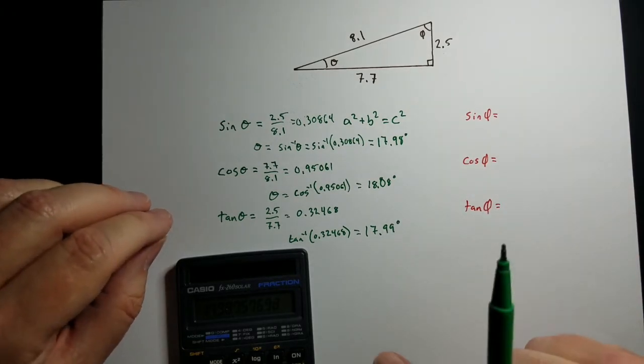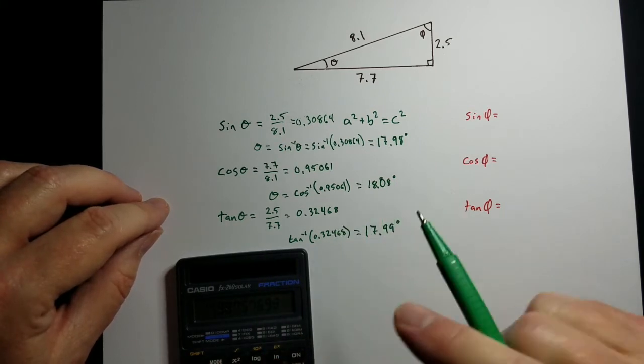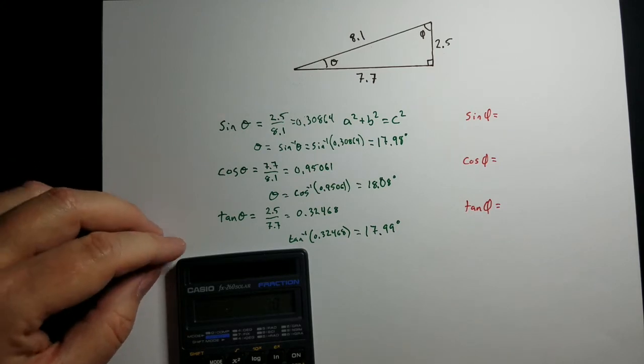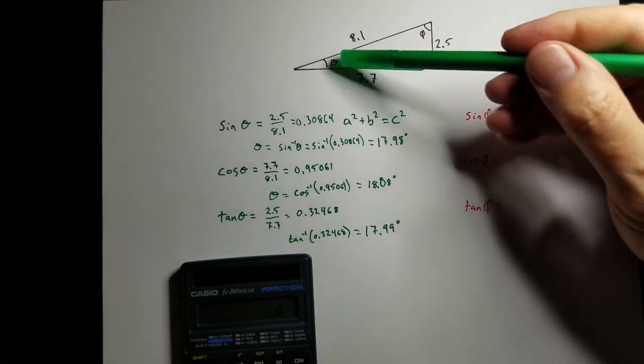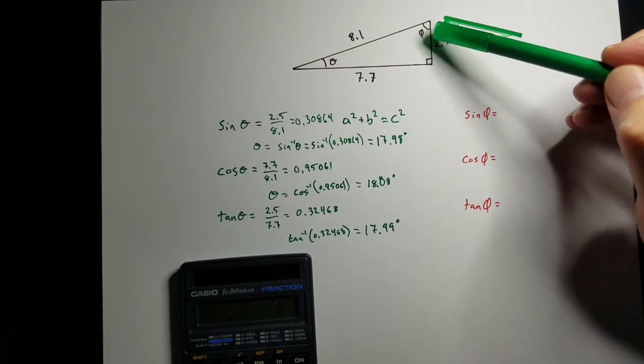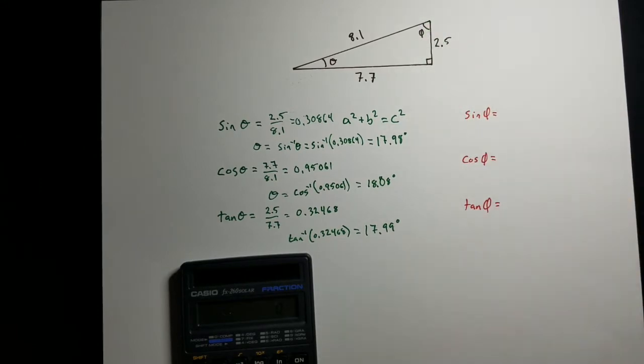In your newer style calculators, you would actually hit shift or second, then your trig function, then type in your decimal, and then hit enter. My calculator is a little bit old, so it does it backwards. Now, that's theta. Phi is up here on this top corner. So for phi, the perspective changes a little bit. Now your perspective is up on this top corner.